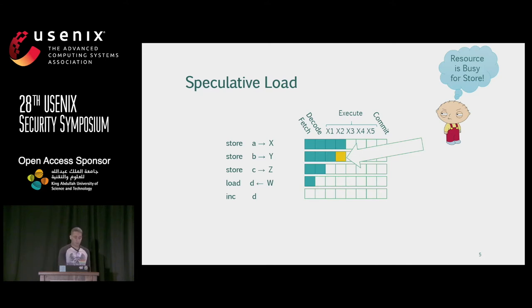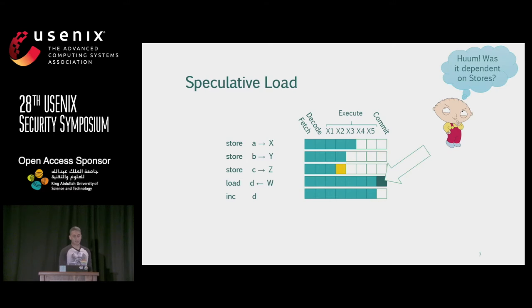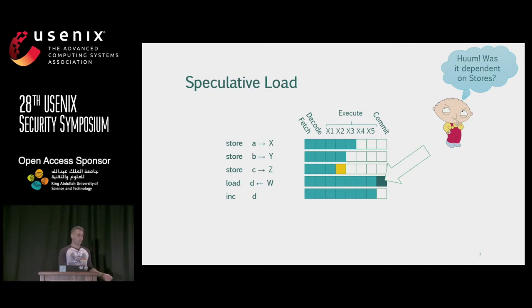What processors do is just execute the load instruction speculatively, and also execute other instructions that depend on that load. Then later, they figure out if this load instruction had any dependency on the store instructions before it. We want to compute things correctly — we need to detect if there is a dependency between the load instruction and any of the store instructions. Before committing results to the architectural state, we need to compare the addresses of the load with other stores that happened before. These stores are not yet committed, so we don't know if they are complete or in-flight.